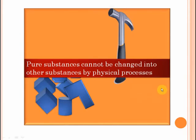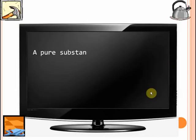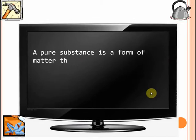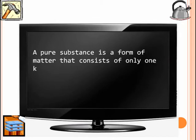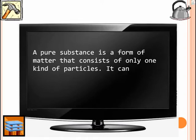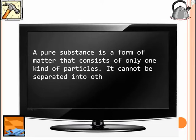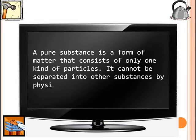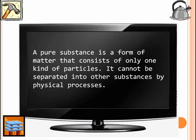So these are the two important characteristics of pure substances: one, that they contain the same kind of particles, and two, you cannot break them to get different other substances. We can now define a pure substance: a pure substance is a form of matter that consists of only one kind of particles and cannot be separated into other substances by physical processes.